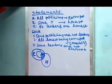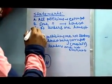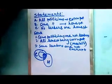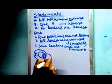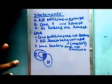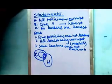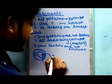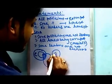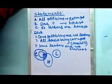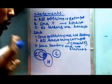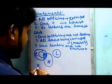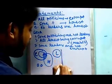From Statement 3, we can say that no leaders are honest. So the leaders circle will be a completely separate circle with no relation to the other three circles. That completes the basic diagram.